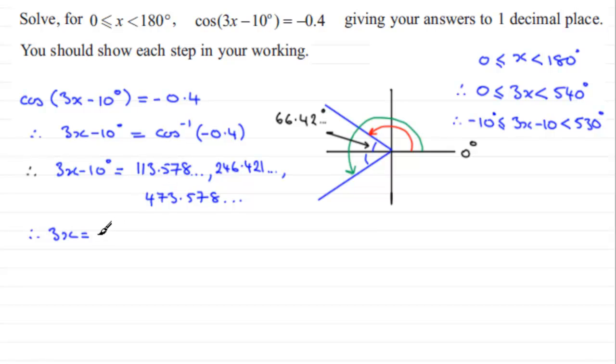Another 10 degrees onto that one gives us 256.421 and so on, and if we add 10 degrees to that one we've got 483.578 and so on.